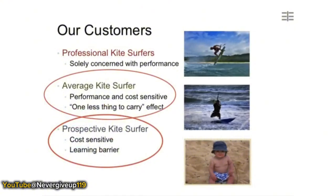Another example was a startup making new kiteboarding equipment. Who were their customers? Professional kite surfers, who were solely concerned with performance. But they had another segment — average kite surfers — and a third segment, prospective kite surfers. They were trying to understand how to segment their market and what the specific performance needs for kite surfers were in each segment.